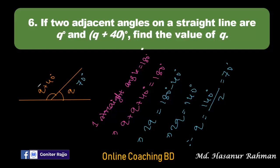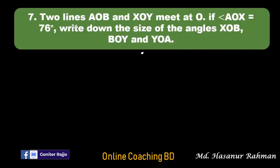Then the other angle should be 70 plus 40, which means 110 degrees. So 70 degrees is supplementary to 110 degrees, and 110 degrees is supplementary to 70 degrees.